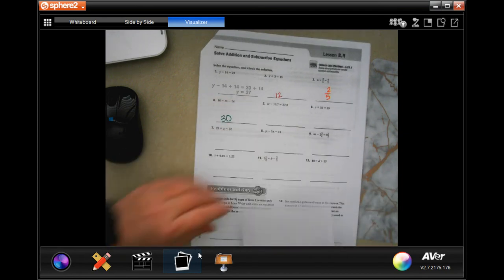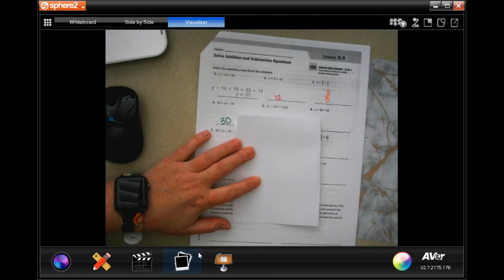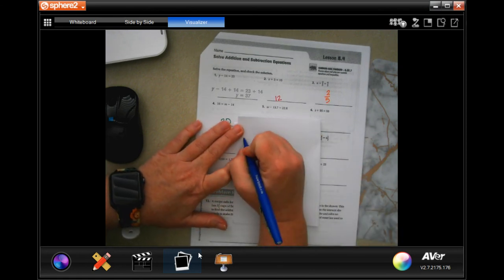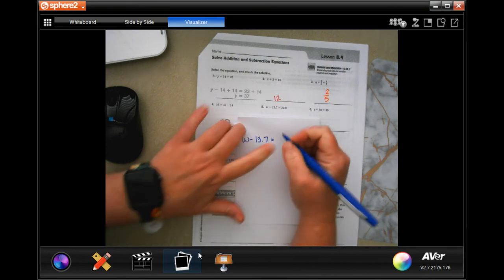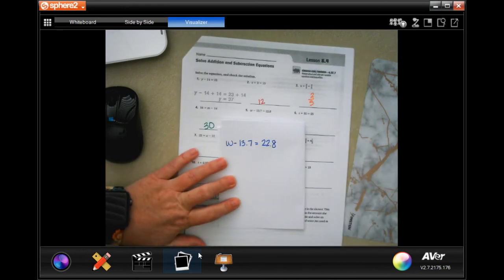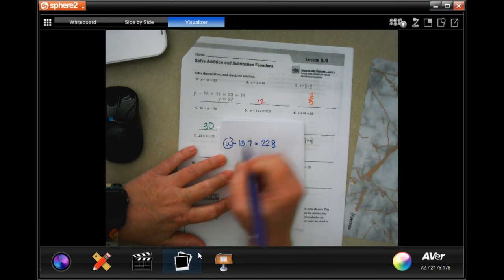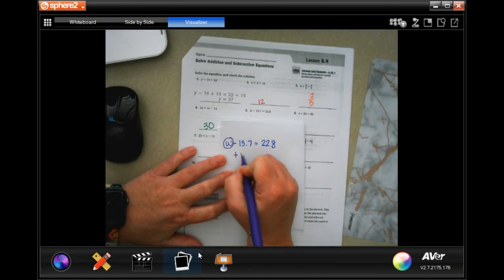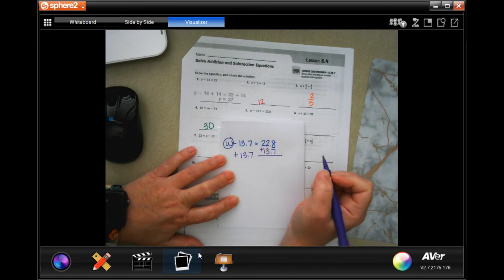They're going to try and throw you off a little bit again with those decimals. W minus 13.7 equals 22.8. So all we're going to do, we want to get this alone. We need to do the opposite of that sign, so we're going to add 13.7. We're going to add 13.7. Notice how I lined up those decimals.